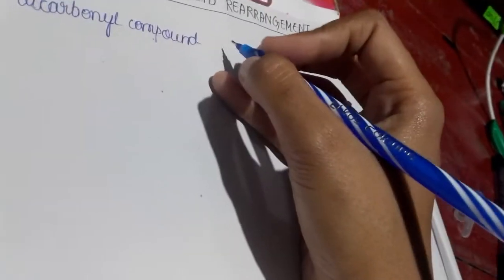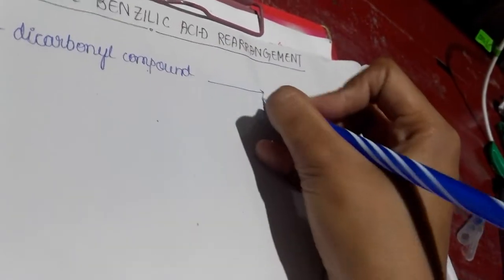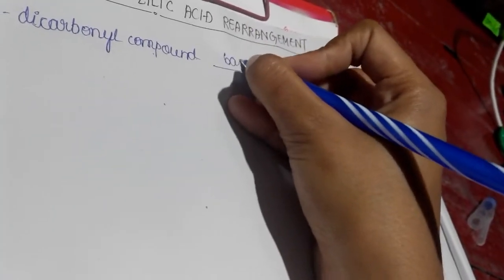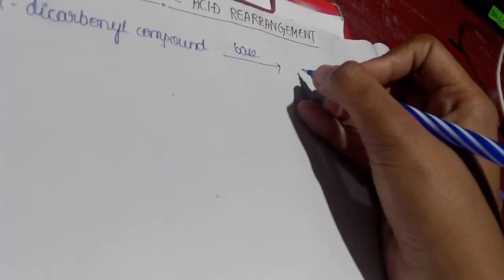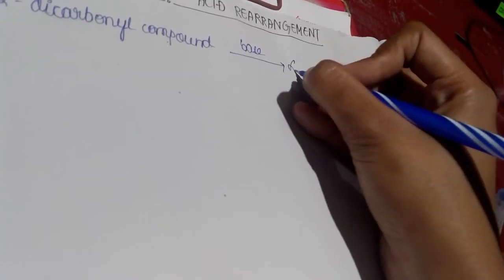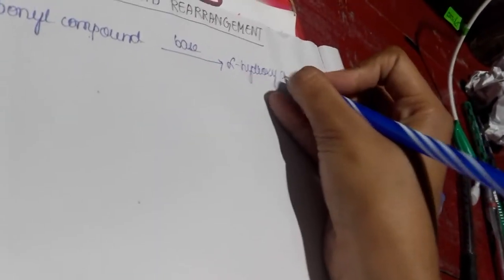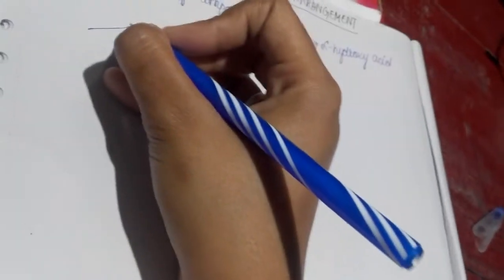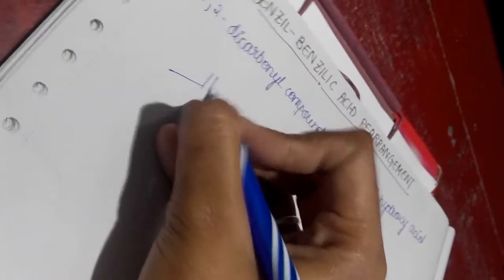So 1,2-dicarbonyl compound with this as a substrate, if we take 1,2-dicarbonyl compound and then to this if we add a base, then as a product what we get is alpha-hydroxy acid. So this is basically the name reaction in general.